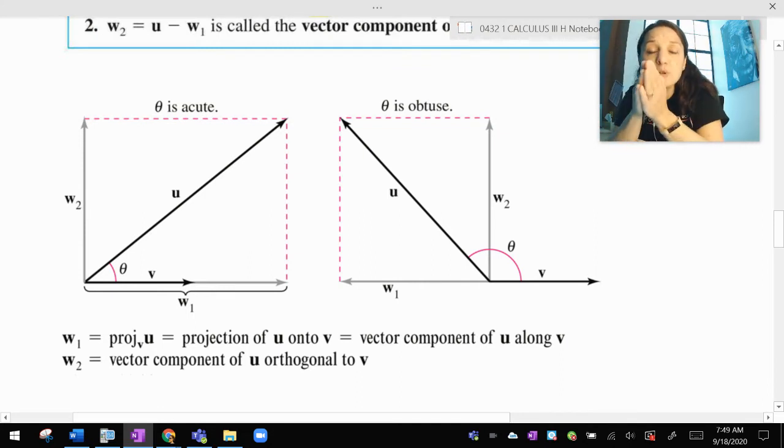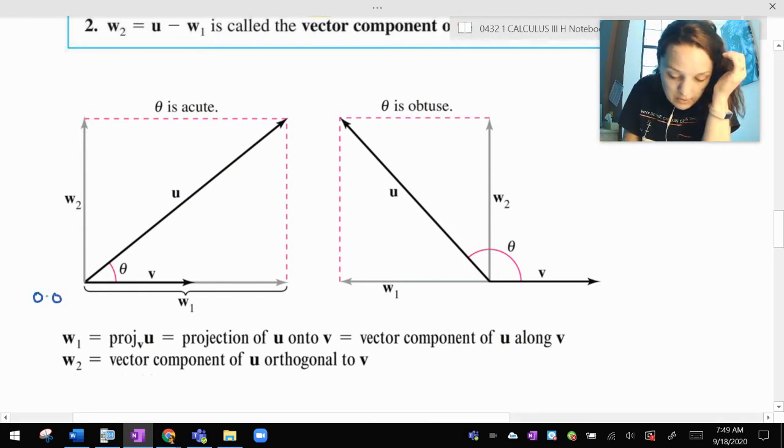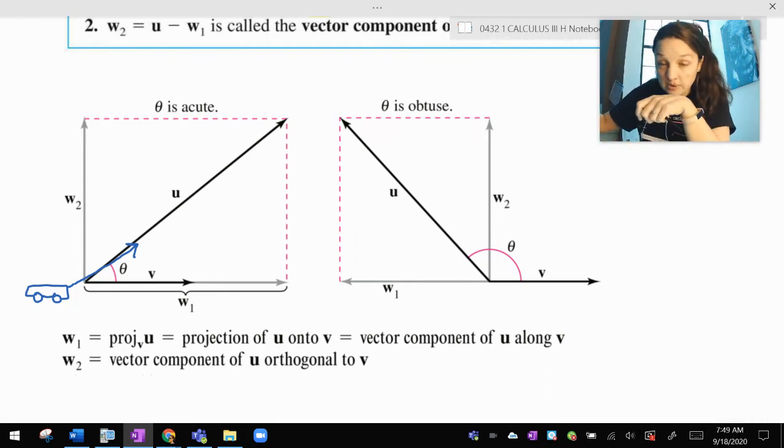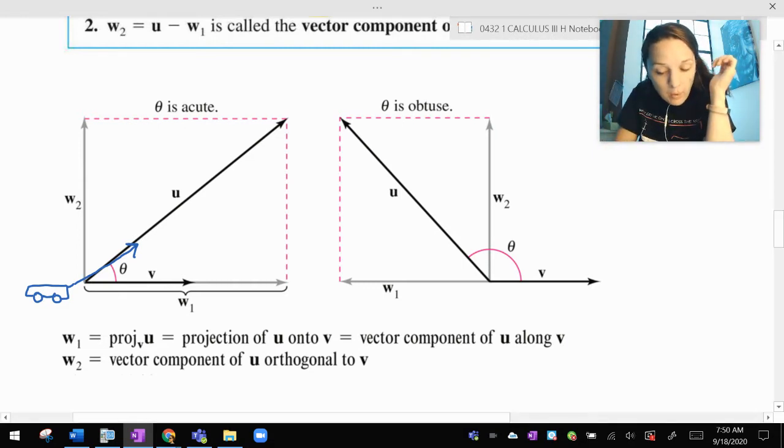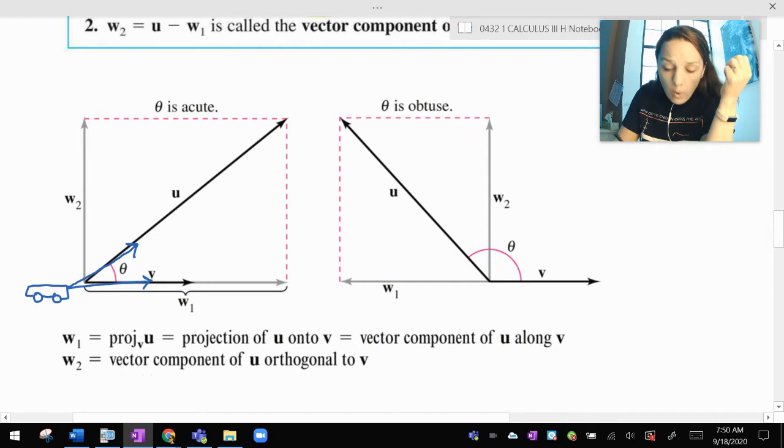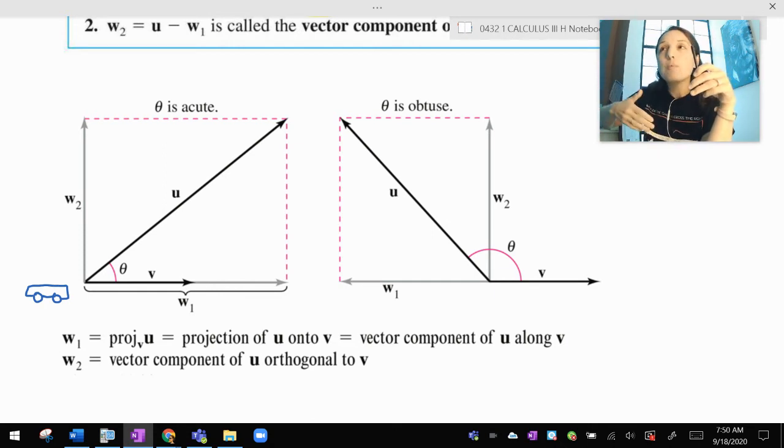w1 is called the projection of u onto v, or the vector component of u along v, and is denoted by w1 equals projection of u onto v. The most important words I said were how you say this out loud. This is called the projection of u onto v. w2 is u minus w1, and that's the vector component of u orthogonal to v. The projection of u onto v is most easily explained using a physics concept. Now, if I am pulling a wagon, okay, so imagine there is a wagon here.